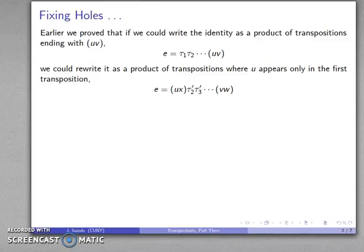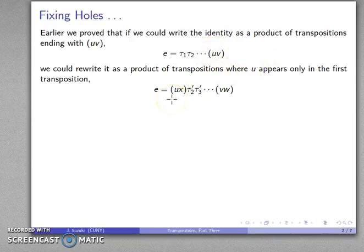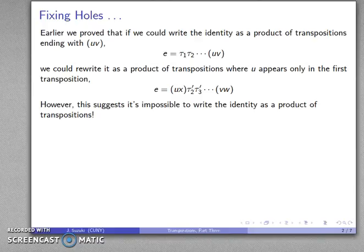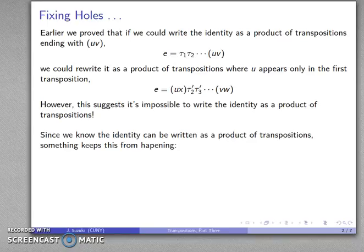Continuing our discussion of transpositions, earlier we showed that if I can write the identity as a product of transpositions ending in u, v, what I can do is sweep this element up to the first transposition. Because this is the only time element u has moved, this product can't be the identity. The problem we ran into is that while this worked for an odd number of transpositions, it also works for an even number, suggesting we can't write the identity as a product of transpositions at all. But we know the identity can be written as a product of an even number of transpositions, so something prevents this.